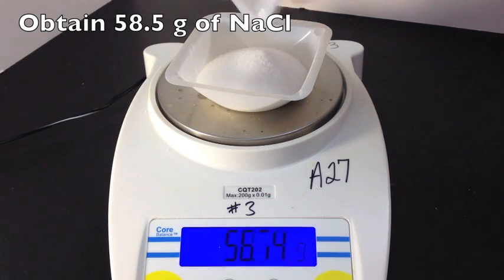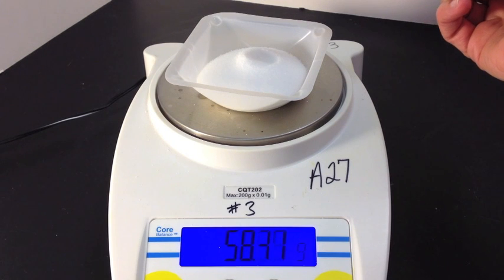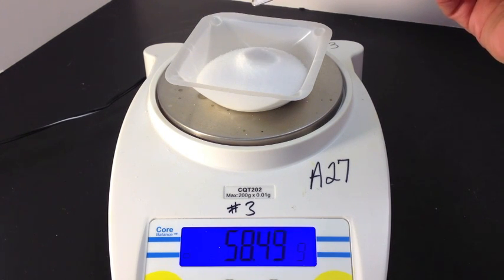You add up the mass of one mole of sodium plus one mole of chlorine, put them together, and get 58.5 grams.